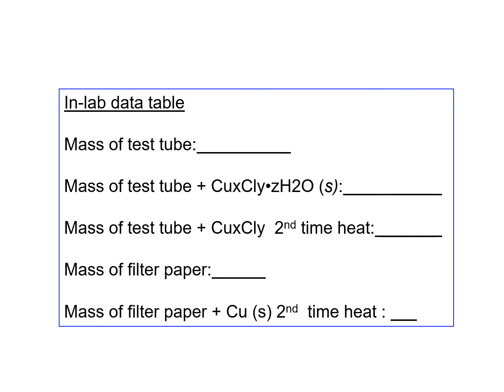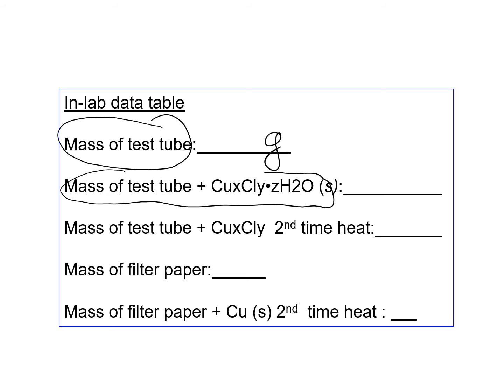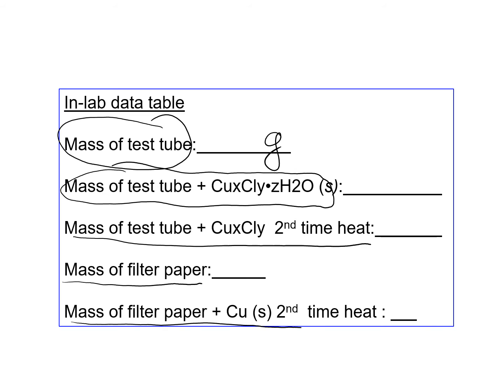The data you'll be collecting in this experiment includes: the mass of an empty test tube in grams, the mass of the test tube plus your original copper chloride hydrate sample, and the mass after the second heating when the water has been removed. You'll also need the mass of a filter paper, and after filtration and heating, the mass of the filter paper plus the copper.